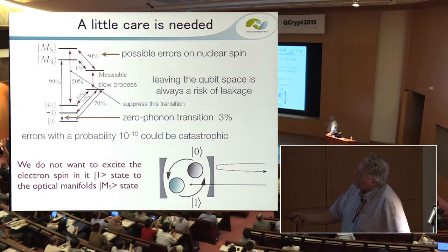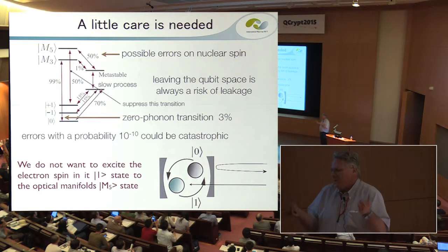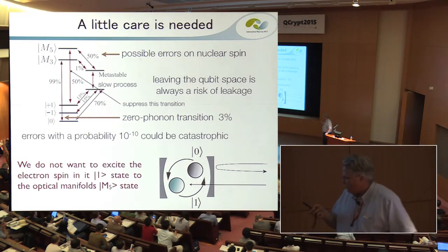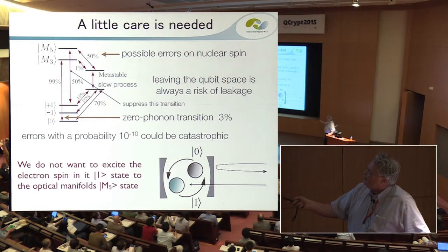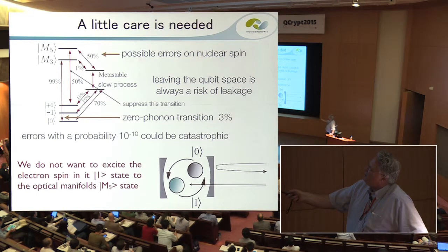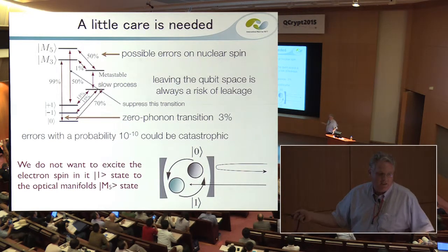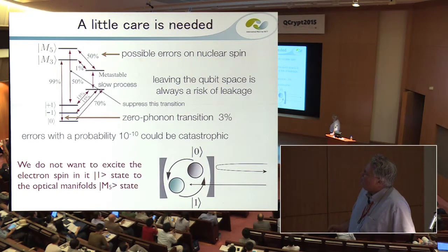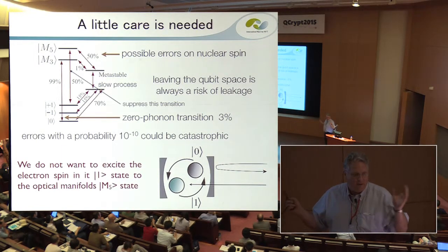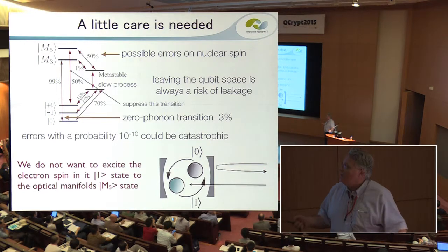In diamond we have to be very careful. People say it's a simple lambda system, no problem — but when you actually look carefully, the excited state manifold leaks to a metastable state. This metastable state is non-spin preserving. The leakage from one of the transitions we want to use is only one percent, but if we get into one of the other transitions there's a 50% leakage rate to this metastable state. The minus-one state in the ground state is outside our qubit space and it's very hard to monitor once the system goes there.